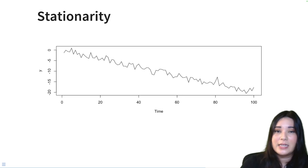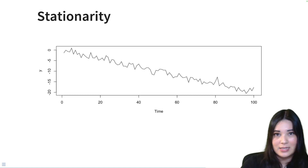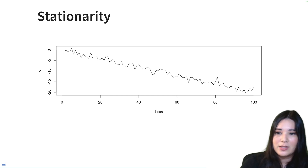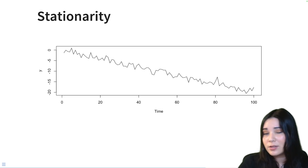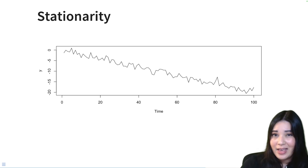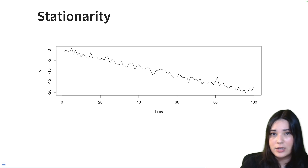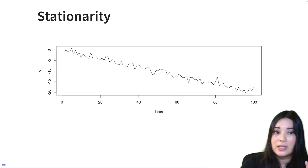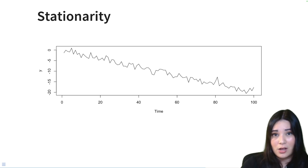Here's another non-stationary time series — pause and see if you can figure out why. The answer is that it doesn't have a constant mean. If we look at the time series, there's no real seasonal pattern and the variance looks relatively constant, however the mean is changing drastically. At the beginning of the time series the mean is very high, and at the end it's getting pretty low. So this is a non-stationary time series.